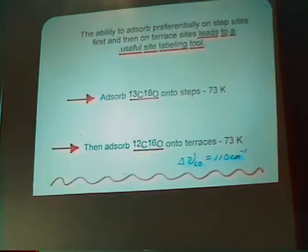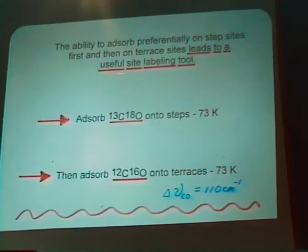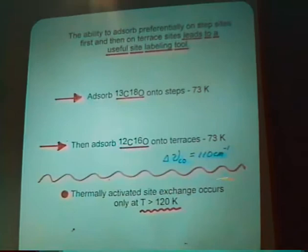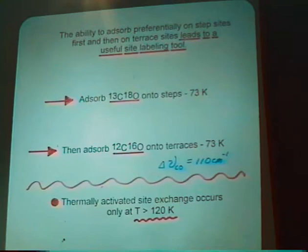The ability to adsorb preferentially on step sites first and then on terrace sites leads to a useful site labeling tool. We can adsorb one isotope of CO, the heavy CO, onto the steps at 73 Kelvin and then we can adsorb light CO onto the terraces at 73 Kelvin. We've selected these two isotopes in order to shift the frequency as far apart as possible to each other by 110 wave numbers, so coupling effects between the molecules are minimized. We know from other studies that thermally activated site exchange between the CO molecules on these two types of sites will not occur until the temperature has increased 50 degrees above the adsorption temperature.